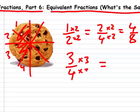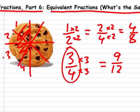Let's pick three. Three times three equals nine, and four times three equals twelve. So three fourths equals nine twelfths. Neat trick, huh?